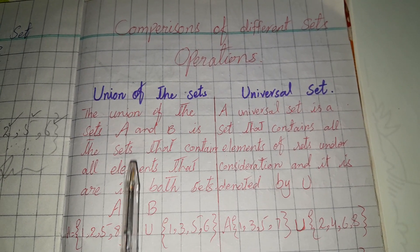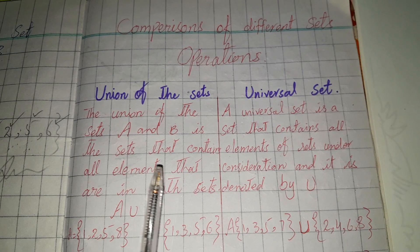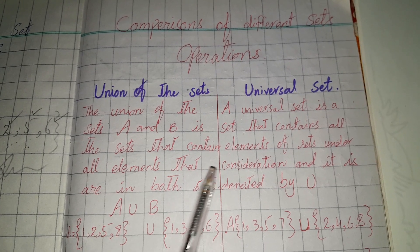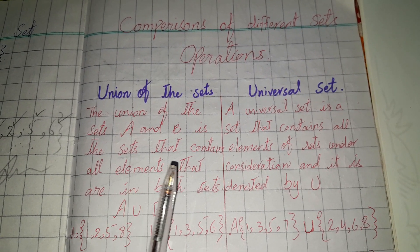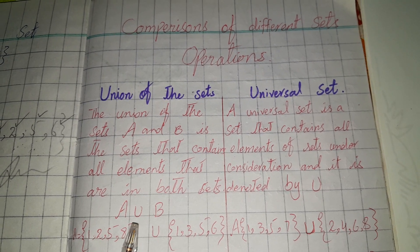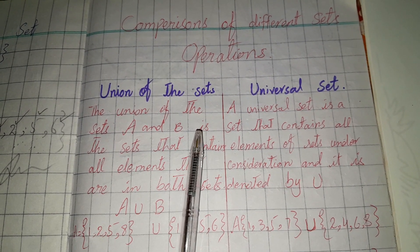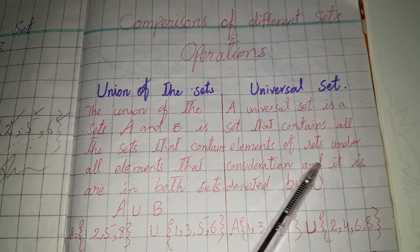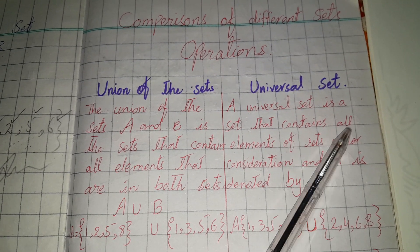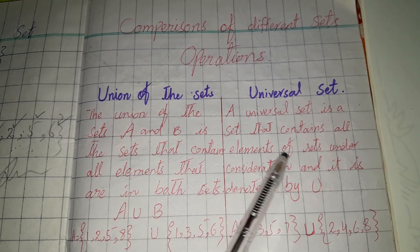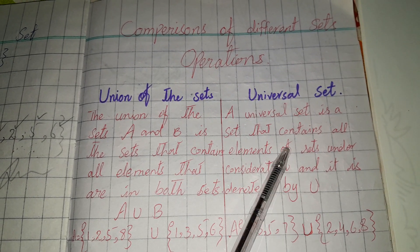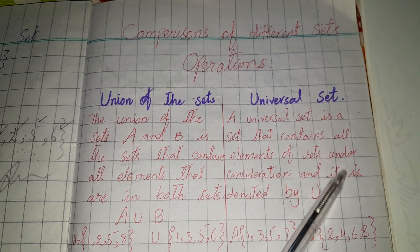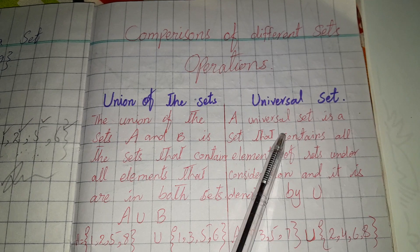It contains all elements that are in both sets A and B under consideration — meaning sets A, B, C, D — which will be used to solve the problem. The universal set contains the same elements which will be used to perform the set operation.